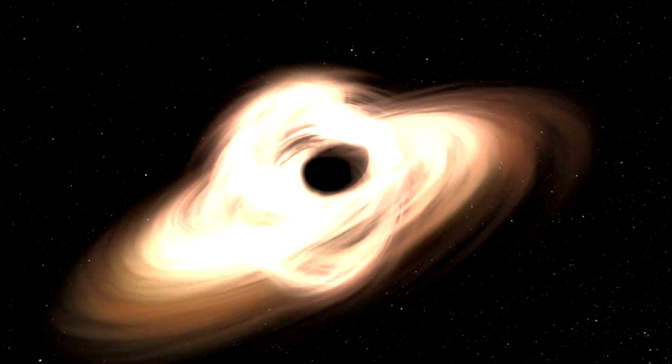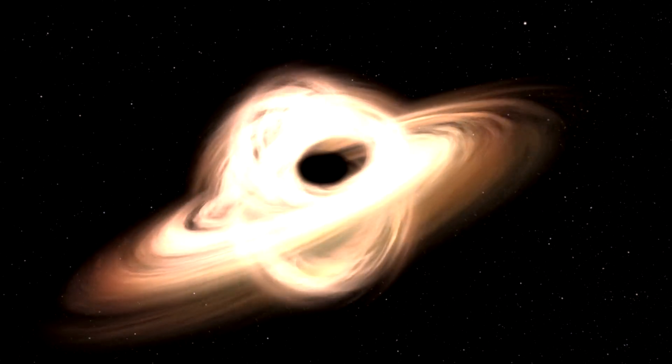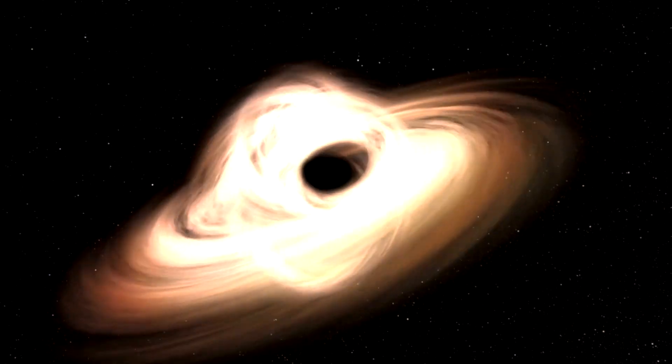In 1994, it became the first stellar mass black hole from which relativistic jets were observed. These jets provide crucial insights into the processes near the event horizon of black holes and the mechanisms by which energy and matter can be ejected at significant fractions of the speed of light.